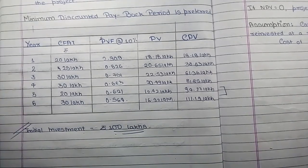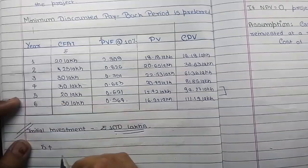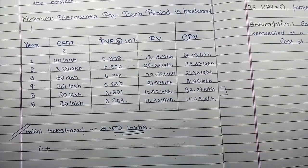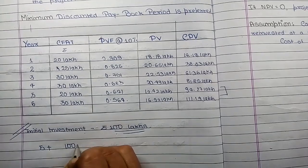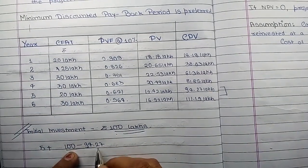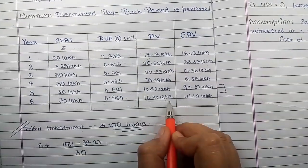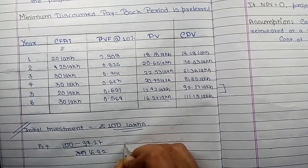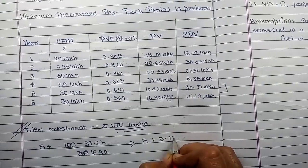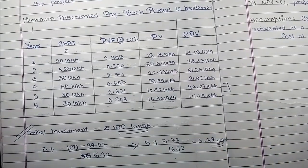To calculate the exact recovery period, we consider the 5 full years' cash flow plus the portion of the 6th year needed to complete 100 lakhs. We have 94.27 lakhs completed till the 5th year, so in the 6th year we need 100 minus 94.27 lakhs. In the 6th year, we consider the present value of cash inflow which is 16.92 lakhs. So: 5 years + (100 − 94.27) / 16.92 = 5 + 5.73/16.92 = 5.3534 years.